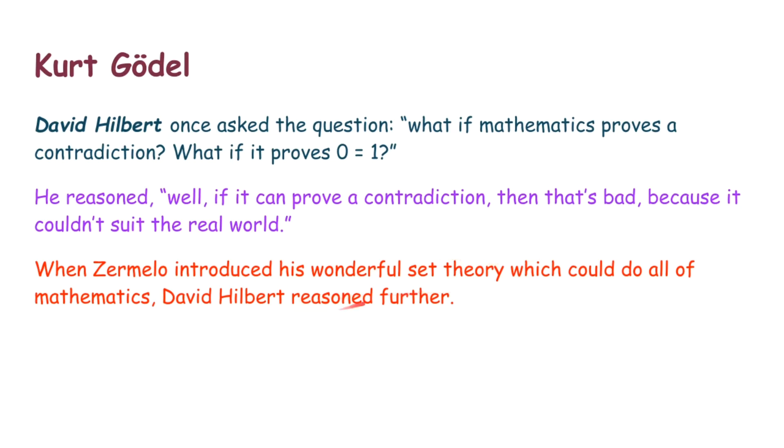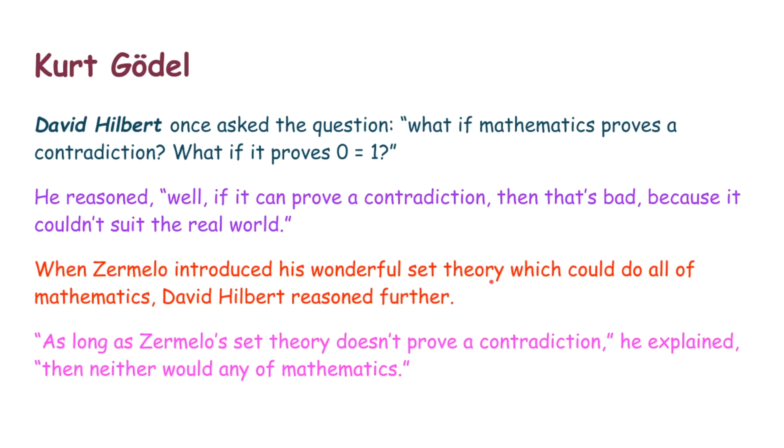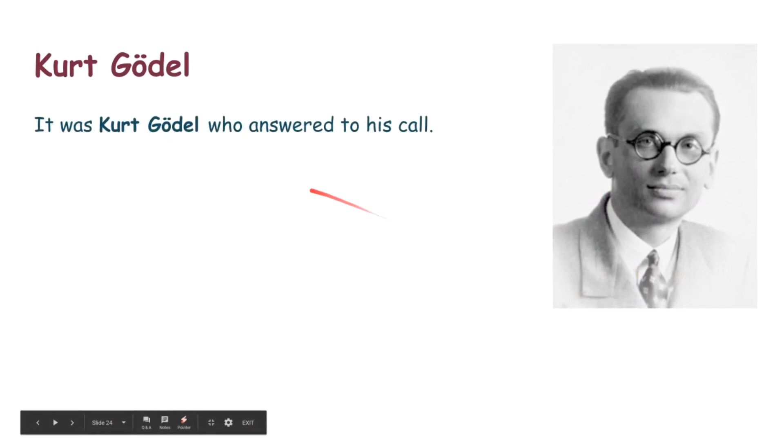So when Zermelo introduced his wonderful set theory which could basically do all of mathematics, David Hilbert reasoned a little bit further. He said, as long as Zermelo's set theory doesn't prove a contradiction, so from his set of rules you can't prove a contradiction, neither would any of mathematics. None of mathematics would prove a contradiction. If you could produce a contradiction from mathematics, then you could prove that contradiction in Zermelo's set theory. So if Zermelo's set theory doesn't prove a contradiction, mathematics wouldn't either. None of it.